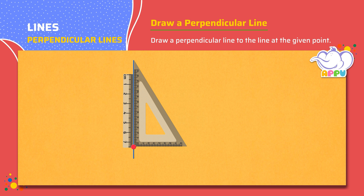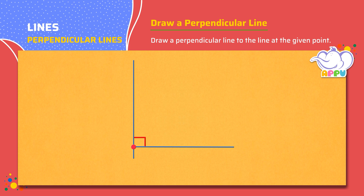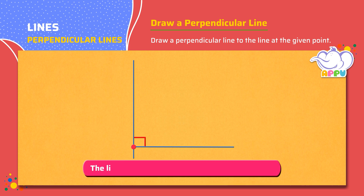Step 3. Draw a line along the other edge. The line drawn is perpendicular to the given line.